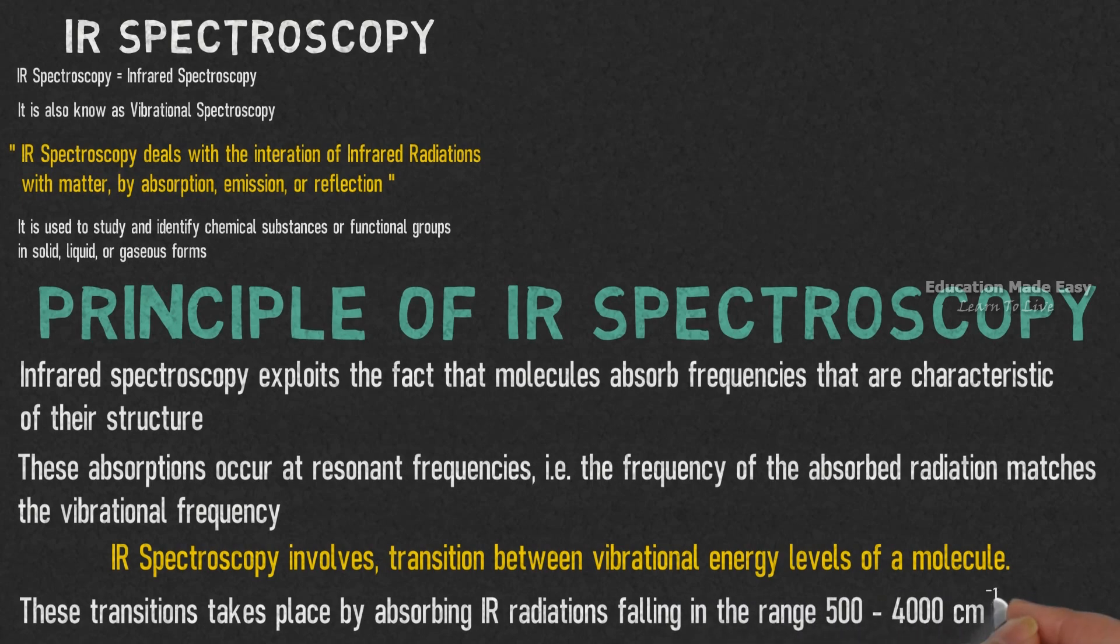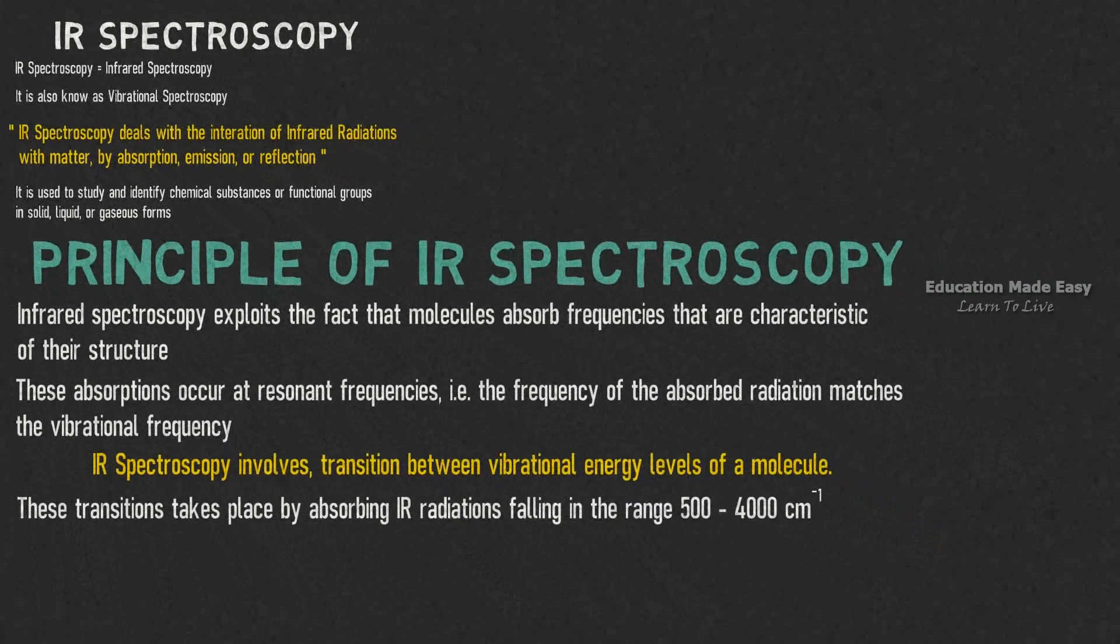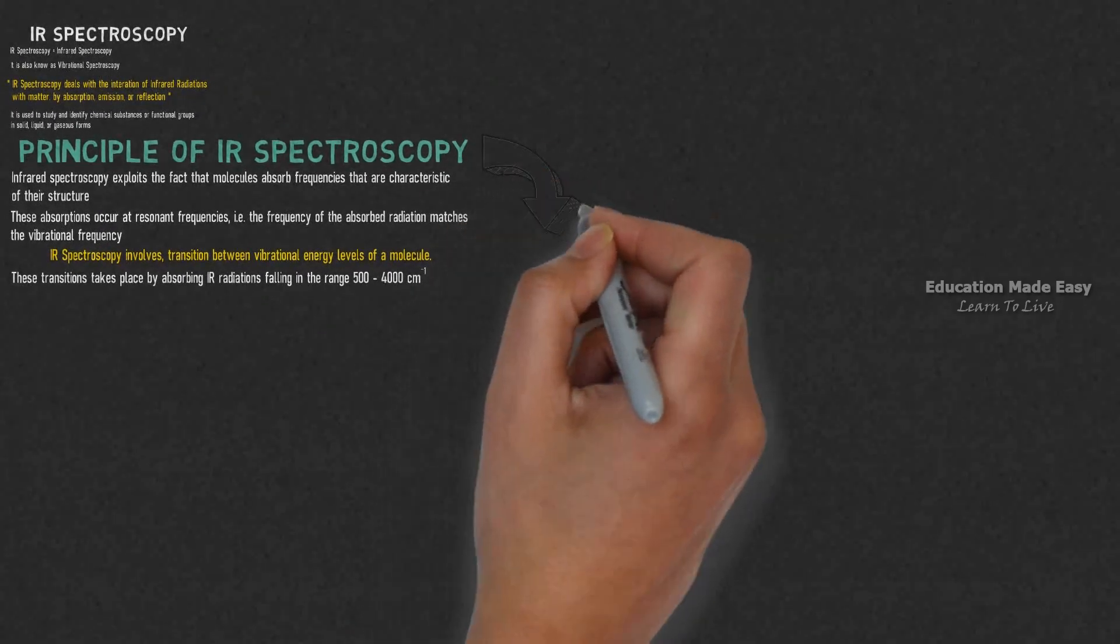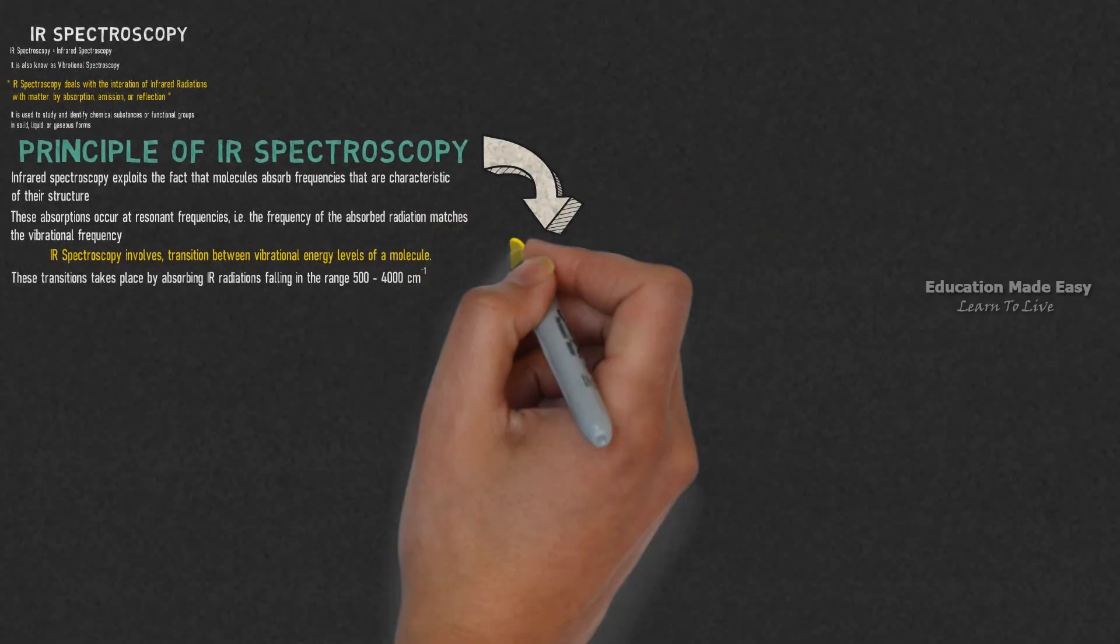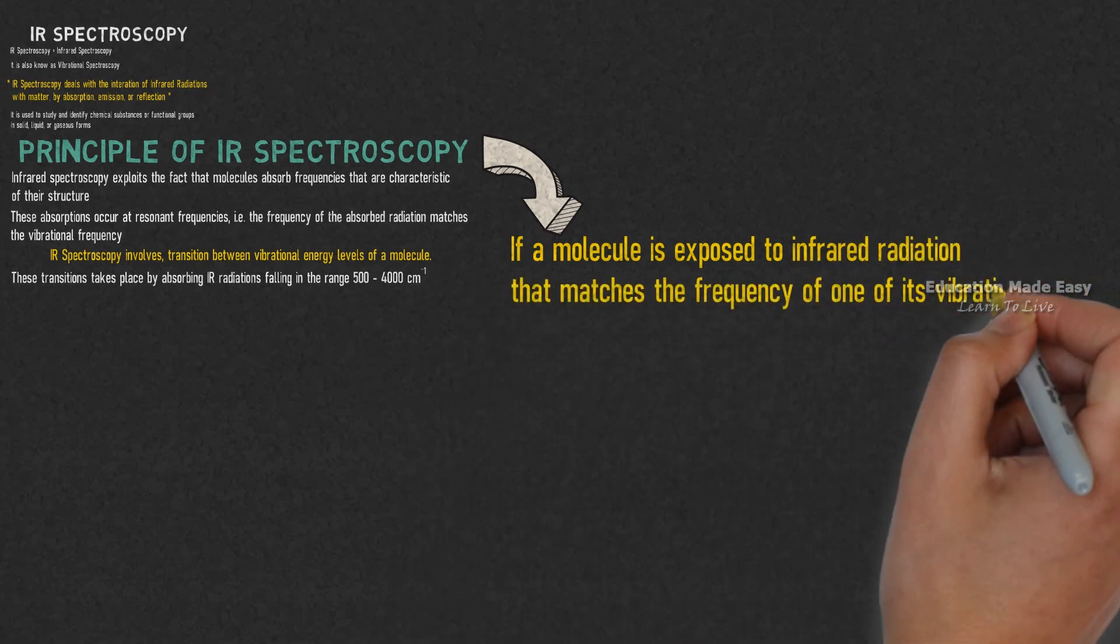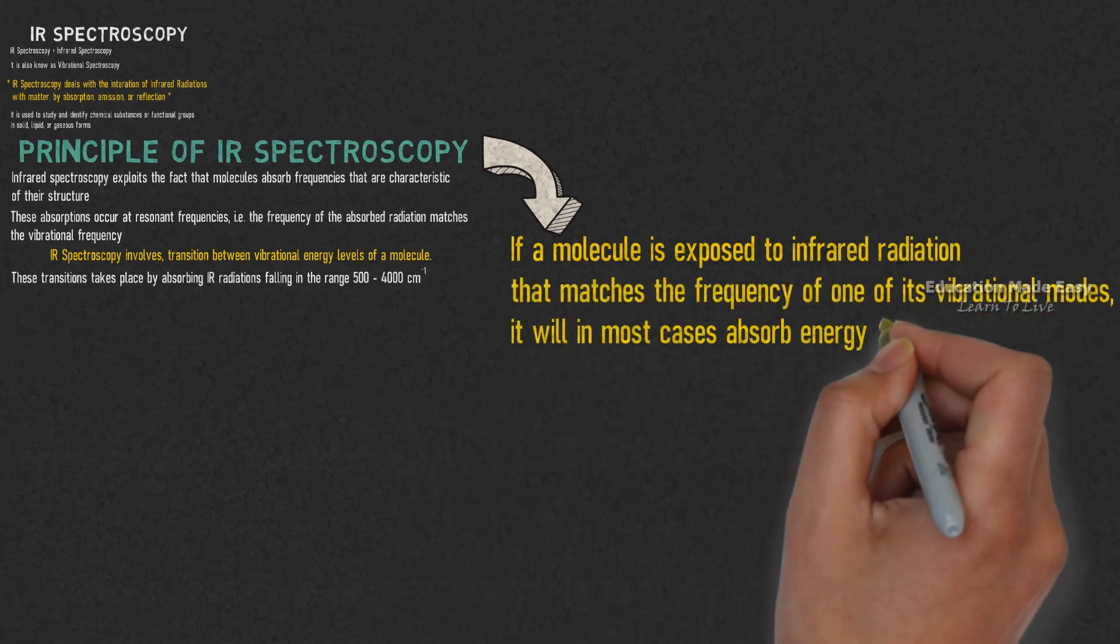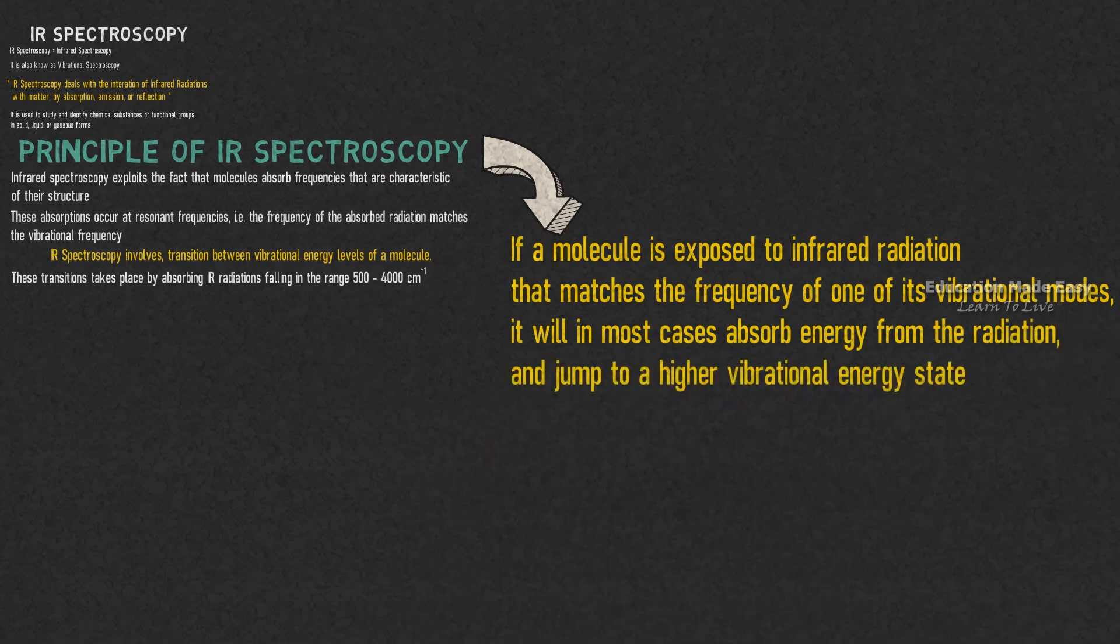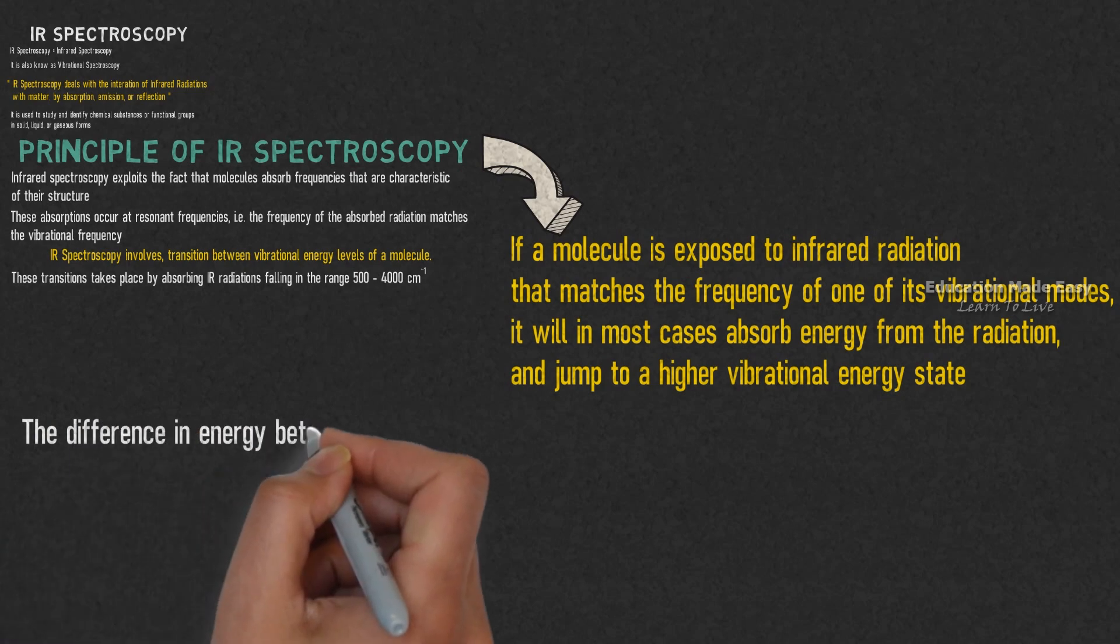range of 500 to 4000 cm⁻¹. According to the principle of IR spectroscopy, if a molecule is exposed to infrared radiation that matches the frequency of one of its vibrational modes, it will in most cases absorb energy from the radiation and jump to a higher vibrational energy state. The difference in energy between the two